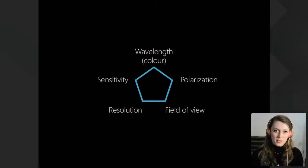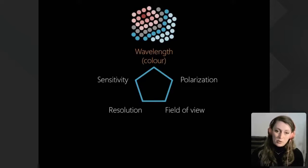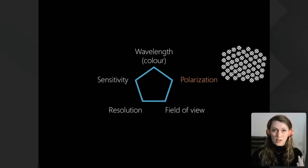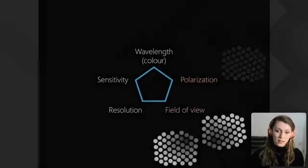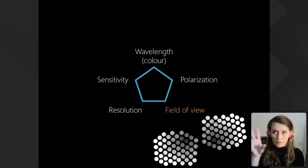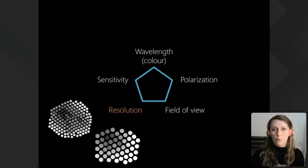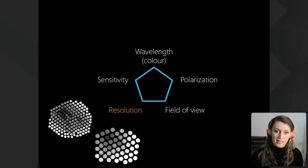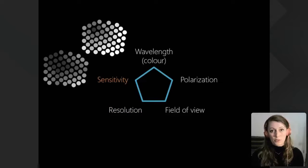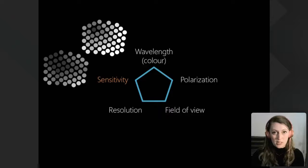The parameters that define vision are: wavelength or colour — different cells sensitive to different wavelengths allow colour vision; polarisation — different cells detecting different planes of oscillation; field of view — what part of the visual scene an eye is sampling; resolution — how narrow each pixel is, with narrower photoreceptors giving finer resolution and more detail in the image; and finally sensitivity — how many photons you need to absorb before a response is triggered, affecting how well you see in dim conditions.